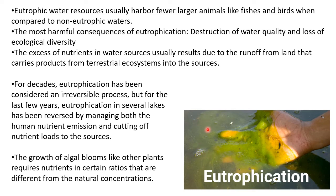The algal or phytoplankton blooms grow on the surface of water, leading to poor sunlight penetration, which results in the death of water-based animals. Fish and small underwater plants don't get sufficient sunlight or dissolved oxygen and thus die. Eutrophic water bodies harbor fewer large animals like fish and birds compared to non-eutrophic waters. The most harmful consequence of eutrophication is the destruction of water quality and loss of ecological biodiversity.